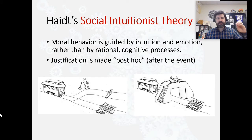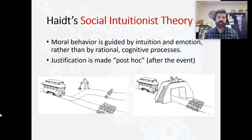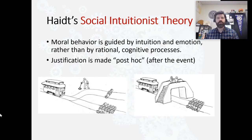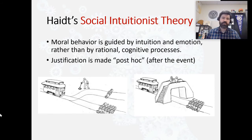This is difficult to explain until we think of it under the lens of social intuitionist theory. The second scenario makes us feel worse, and so for many people — not everyone — they view that second scenario as being morally wrong, whereas pulling a lever is viewed as morally acceptable.